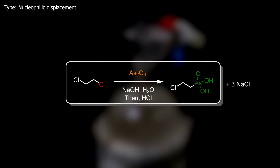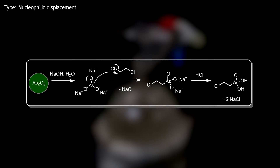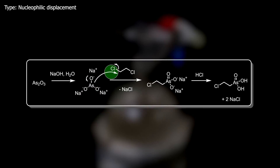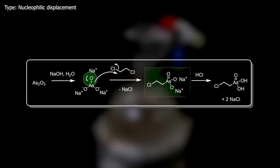In this reaction, the 1,2-dichloroethane reacts with the formed sodium orthoarsenite to form sodium 2-chloroethyl arsenate and sodium chloride. Afterward, it is acidified with hydrochloric acid to form the corresponding arsonic acid. Arsenic trioxide reacts with aqueous sodium hydroxide to form sodium orthoarsenite, which is a nucleophile, so it attacks one of the electron-deficient carbons of 1,2-dichloroethane, kicking off the chlorine while also moving an electron pair from one of the oxygens to form a double bond with the arsenic. We are then left with sodium 2-chloroethyl arsenate and sodium chloride.